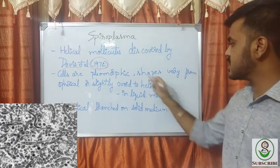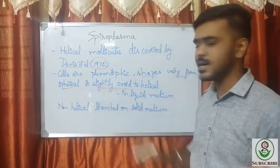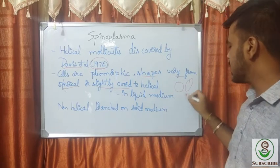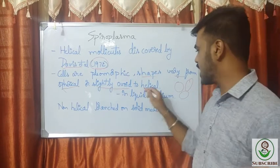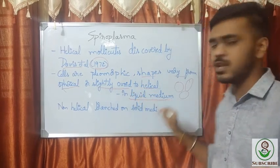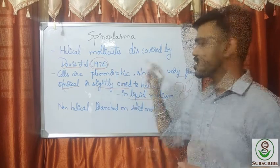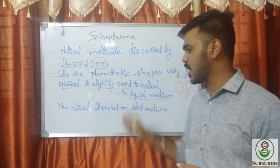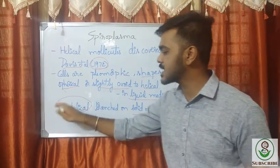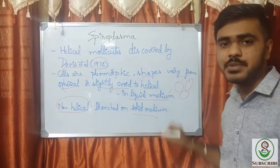The shapes of spiroplasma vary from spherical, slightly ovoid, elliptical, and helical. Spherical shapes are found when observed in a liquid medium. When you observe spiroplasma in a solid medium, you will find non-helical structures. That is the difference between observation in a liquid medium versus a solid medium.